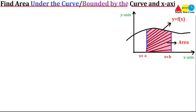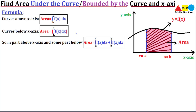Before using the example, I will share the formula used to find the area. The formula depends on the position of the curve. If the curve is located above the x-axis, as shown in the graph, then you use formula one: Area = ∫[a to b] f(x) dx, where a and b are the limits or boundaries between which the area is to be found.